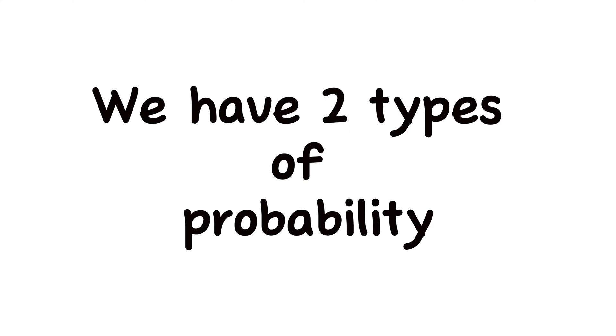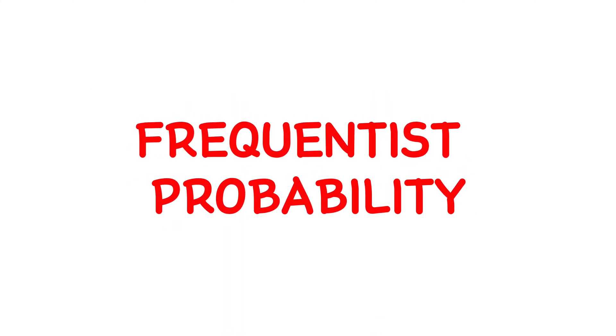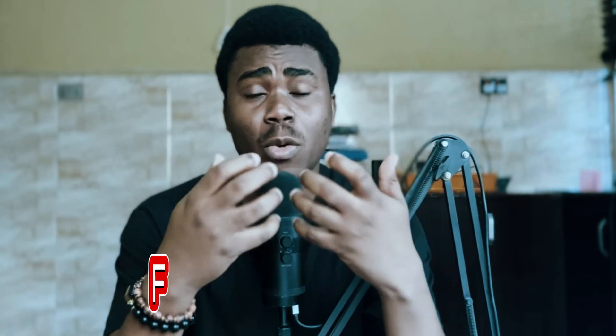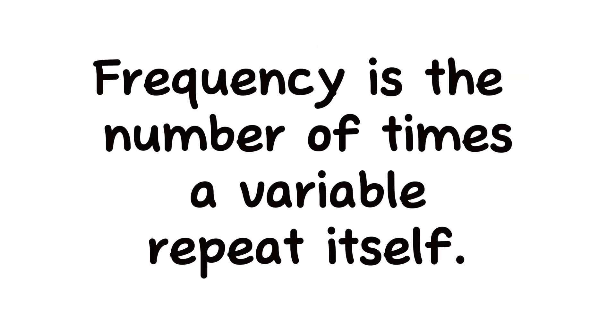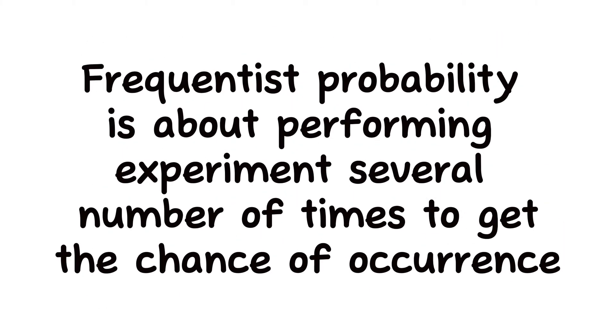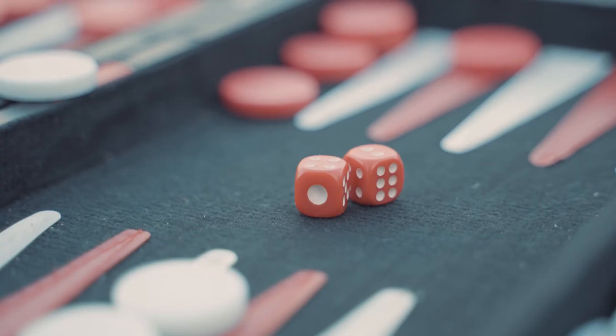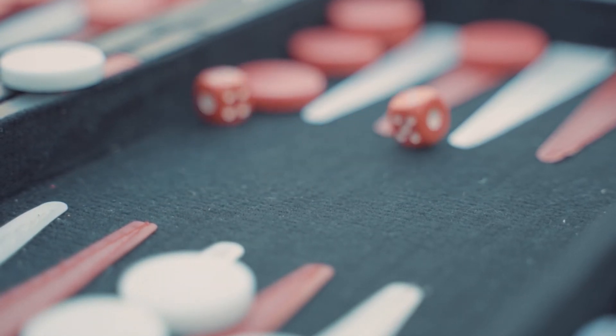Let's talk about the types of probability. Basically we have two types: frequentist probability and Bayesian probability. As the name implies, frequentist probability comes from the word frequency — in simple terms, the number of times something is repeating itself. In the mathematical context, frequency is the number of times a specific variable repeats itself. A frequentist gets the probability of an event by performing the experiment several times. For example, what is the probability of rolling a six on a fair die? A frequentist will roll the die close to a thousand or two thousand times.